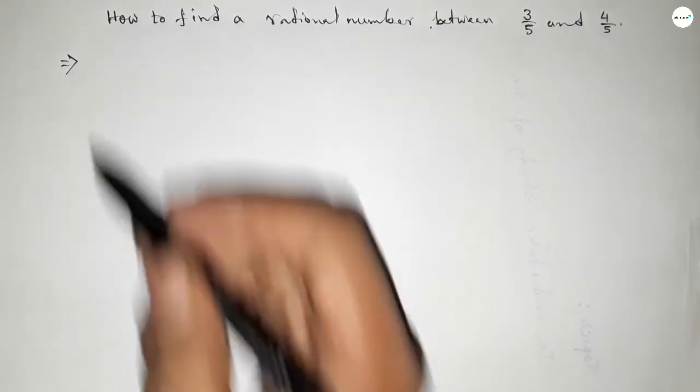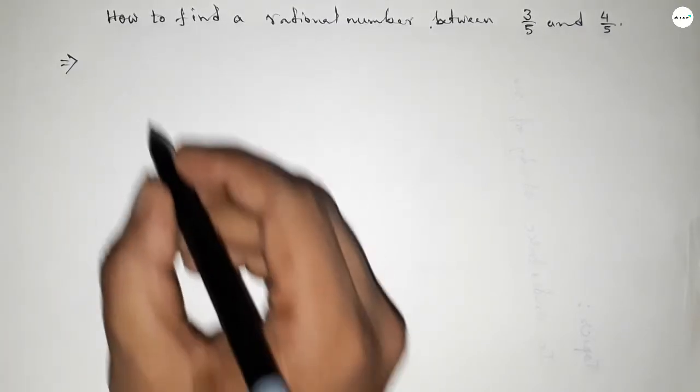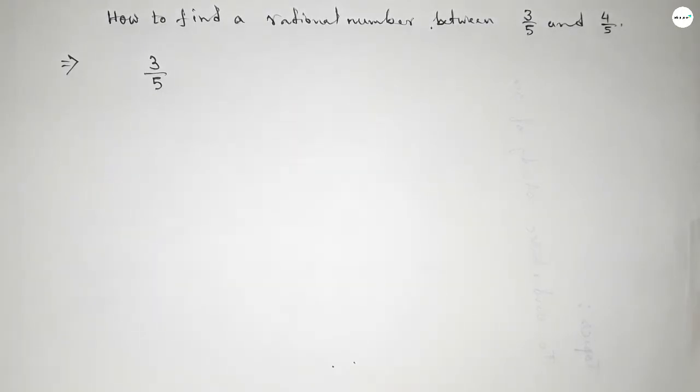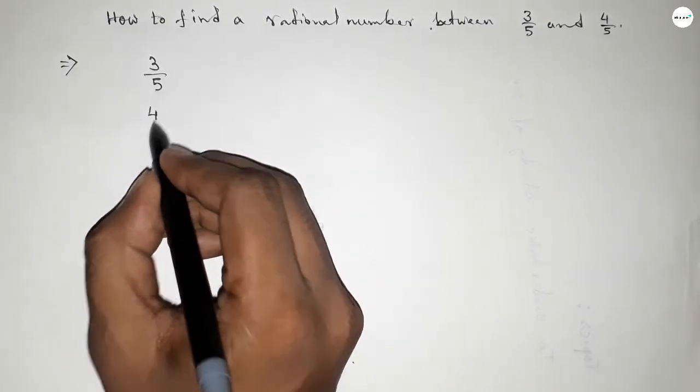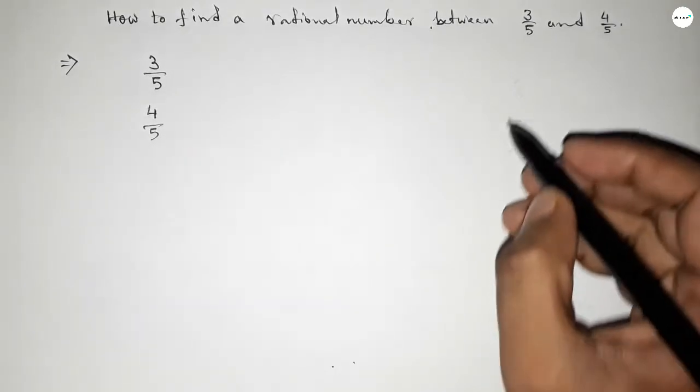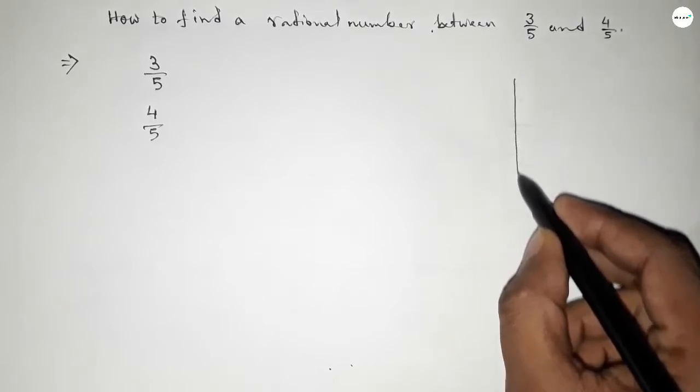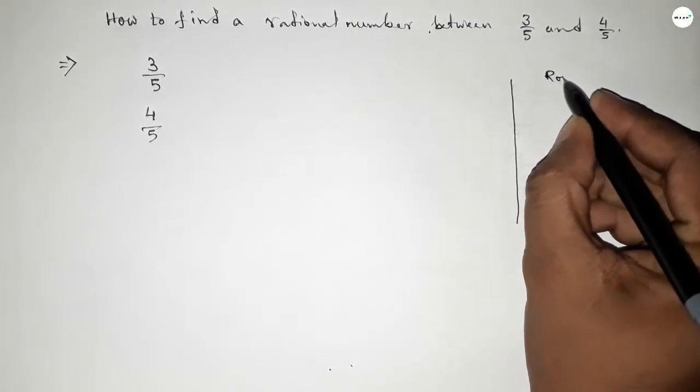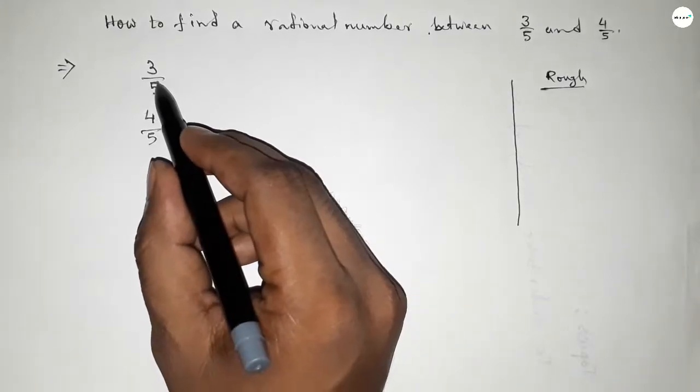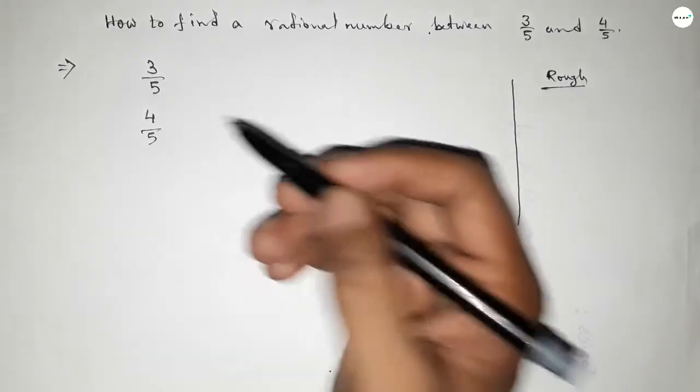First of all, write down the given numbers: 3/5 and 4/5. Now let's do some rough calculations. Here, the denominators of both fractions are the same. We need to find a natural number between 3 and 4.